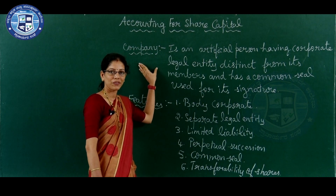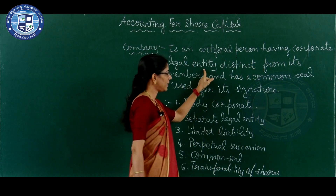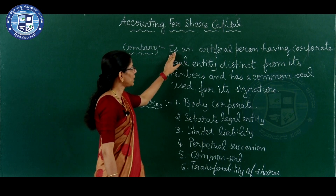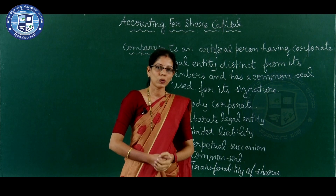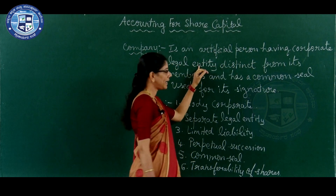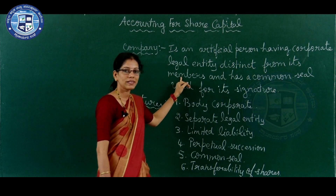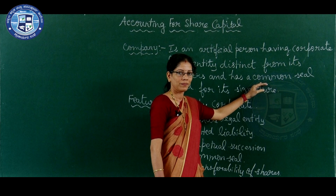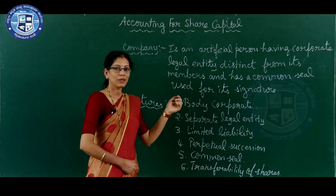First, let us learn the meaning of company. A company is an artificial person having corporate legal entity distinct from its members and has a common seal used for its signature. Company is an artificial person means like human beings, a company can also issue money or borrow money and can own property in its own name. That is why it is known as an artificial person.